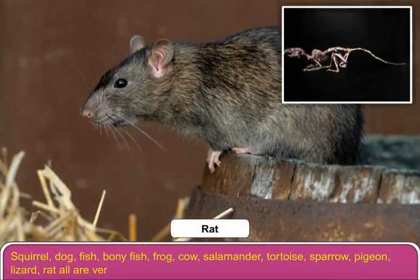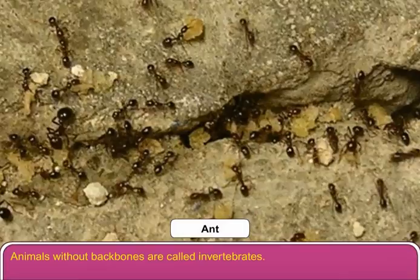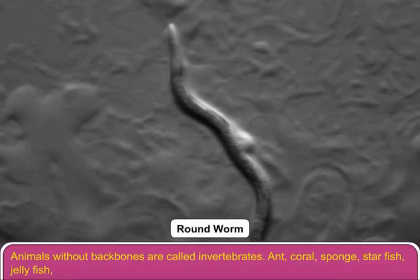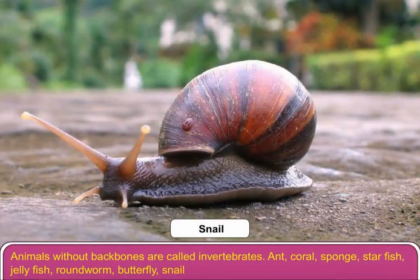Animals without backbones are called invertebrates. Ant, coral, sponge, starfish, jellyfish, roundworm, butterfly, snail, etc. are called invertebrates.